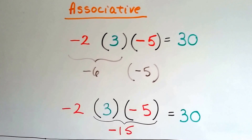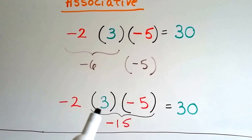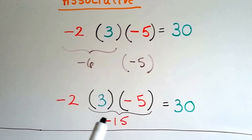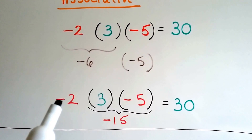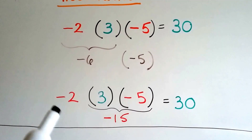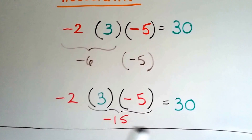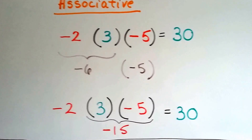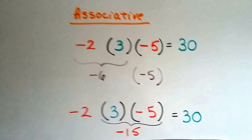So it's going to be 6 times 5 equals 30 with a positive because they're like signs — they're both negative. We can also multiply the positive 3 to the negative 5 first and get a negative 15, then multiply it by the negative 2. They have like signs, so that's going to be a positive 30. It didn't matter, so the associative property works.